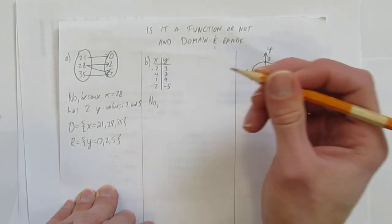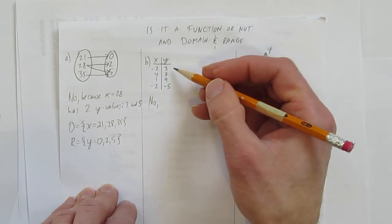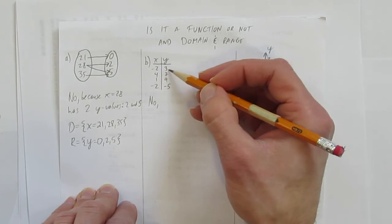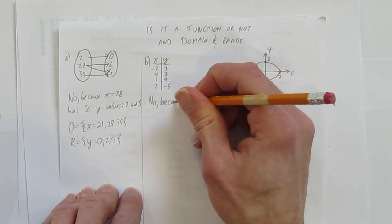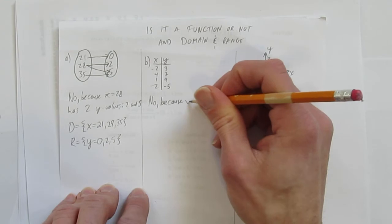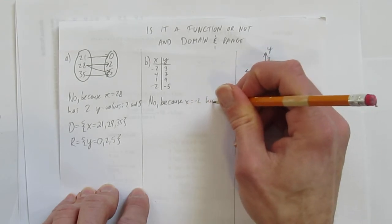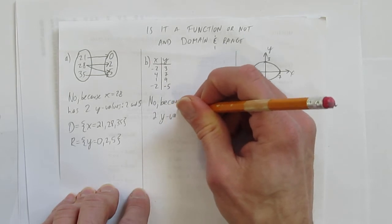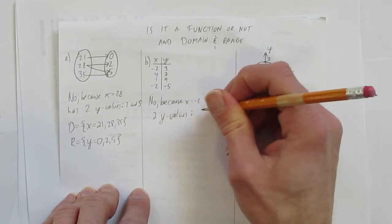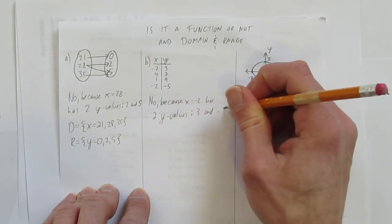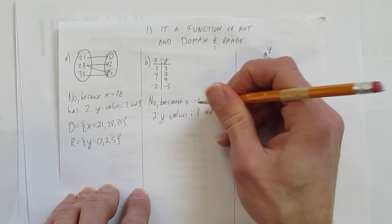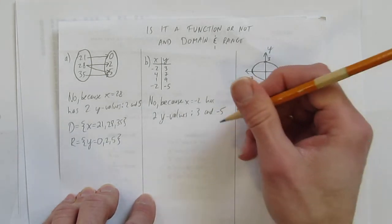Our answer's going to be no again. And just like before, the problem is an x, in this case negative 2, has two possible y values. So our answer is no, because x equals negative 2 has two y values. In this case, 3 and negative 5. By definition, if you have an x that has more than one y value, you're not a function.